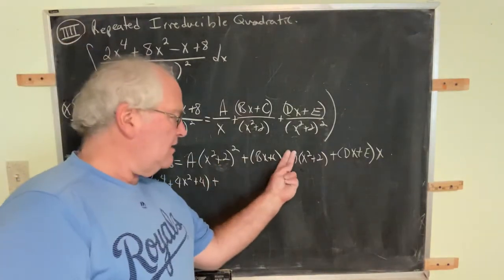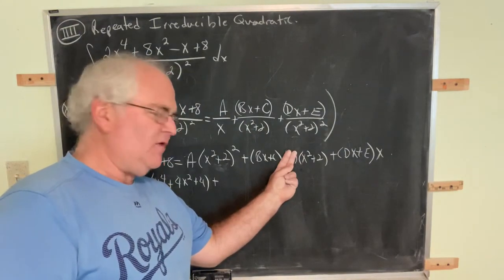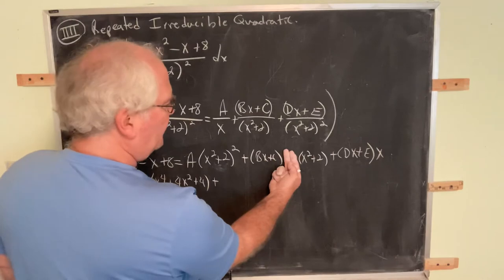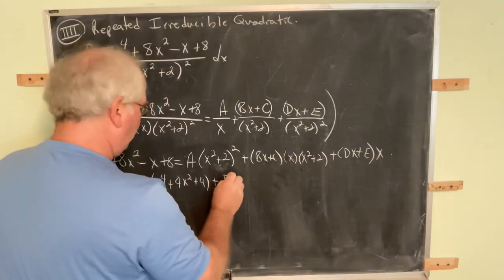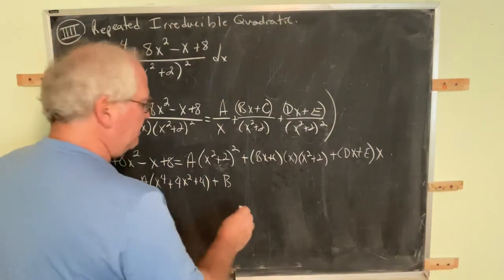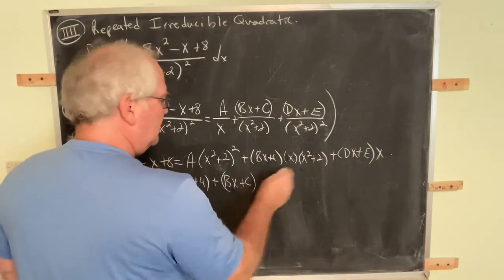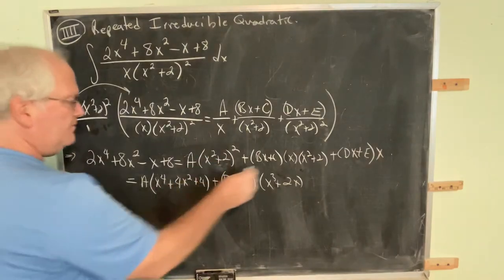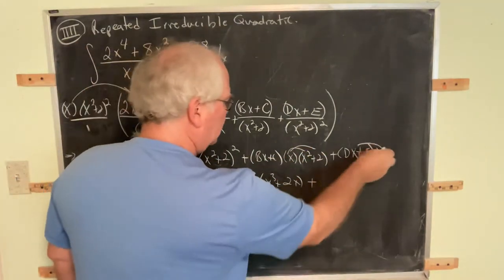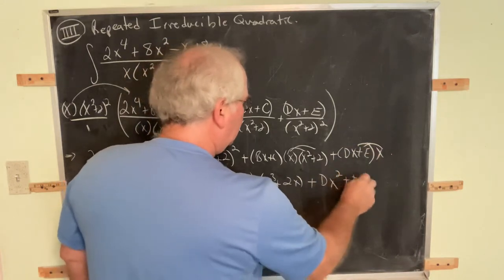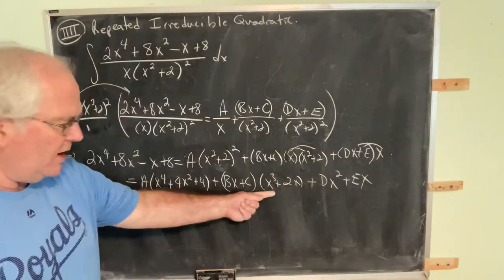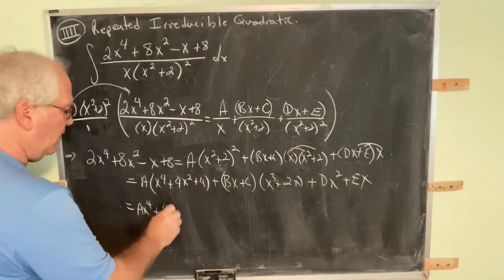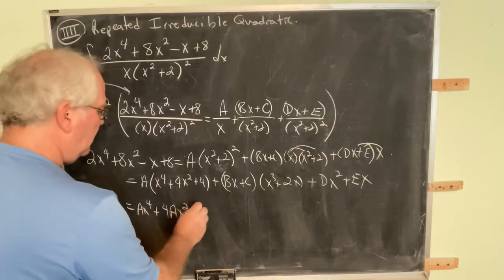Plus, here, ignore the x, go foil that, and then whenever you get from that, multiply everything by x to the first. So when you foil, you get Bx to the third, but you need another x, so that's Bx to the fourth. Here, let's just do this. Bx plus C. Let's just go ahead and distribute that. Let's say x to the third plus 2x. I'll just do two steps here. Foil here, distribute here, and we can go ahead and distribute here and be done with this. Dx to the second plus Ex.